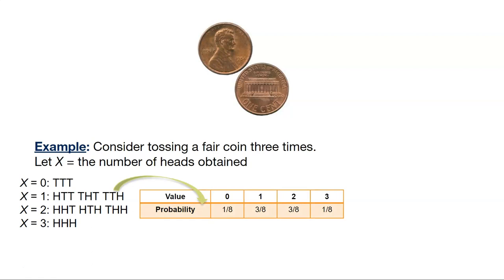And so what does that look like? Here we have the probabilities. What's the probability of obtaining zero? Well, that's one out of eight. We can only get tails, tails, tails one time out of eight times that are all the possibilities for that.